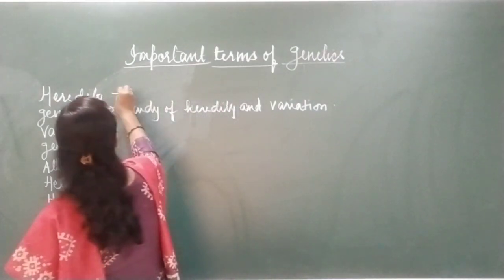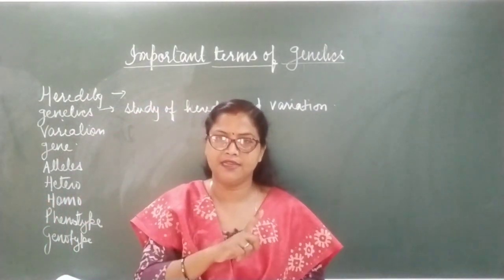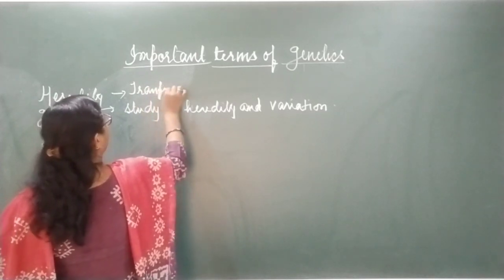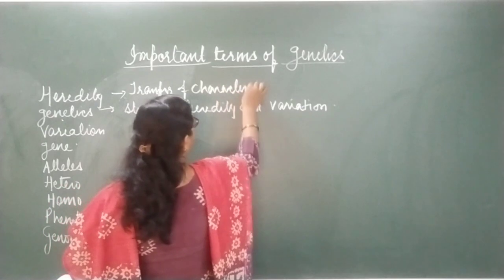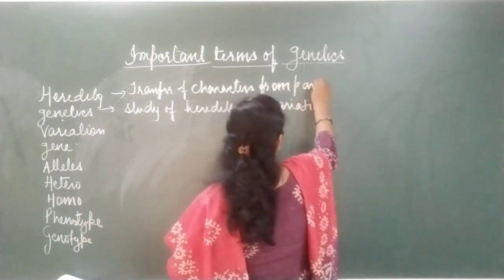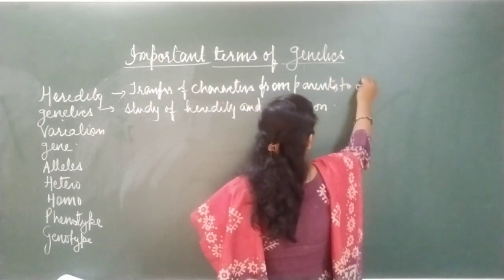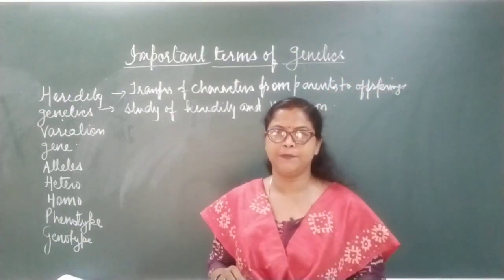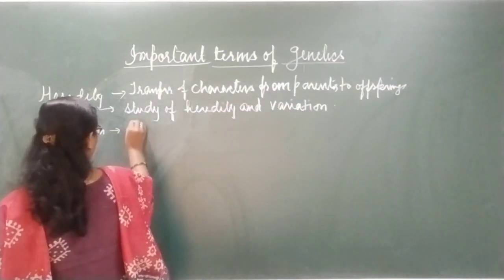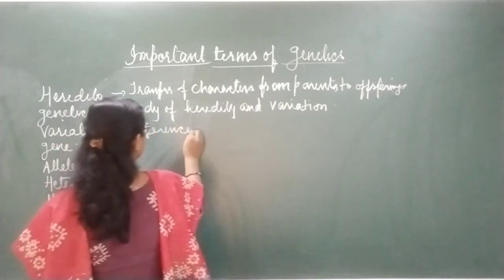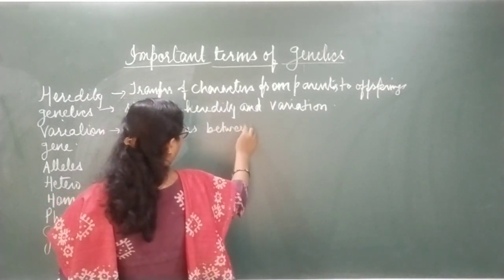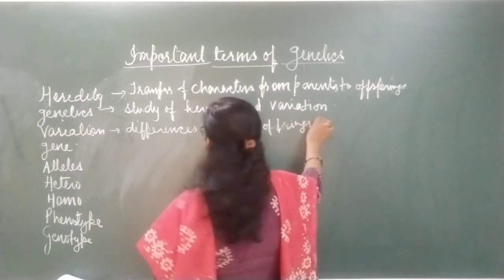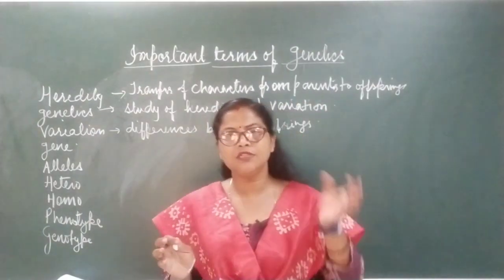Now, heredity — what do we know about heredity? The transfer of characters from parents to their offspring is known as heredity. And what is variation? Variation refers to the differences between offspring, which arise due to the presence of genes.